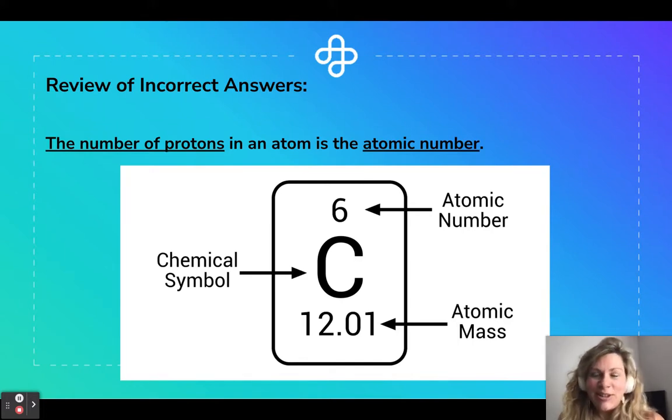So let's review the incorrect answers. The first one was the number of protons. That's not the atomic mass. That is the atomic number. So the atomic number at the top here, 6, that tells us how many protons are in each atom. This is super important for a lot of different concepts in chemistry and being able to know how many protons a particular atom of an element has. So in the case of carbon, there will always be six protons in the nucleus. If the number of protons in the nucleus changes, it changes the whole element. So the atomic number is tied to the identity of the element itself. And that's really important to remember. If you change the atomic number, you change the element.